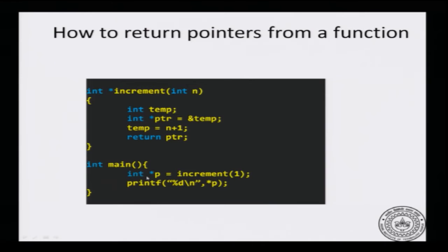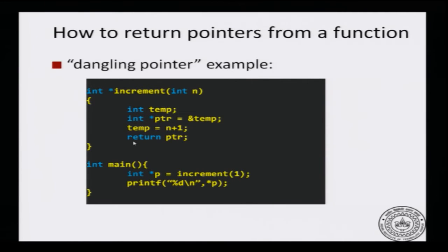I have a main function in which I have an integer pointer p, and I will make it point to the return value of increment(1). The increment function takes an argument, increments the value, makes a pointer to the incremented value, and returns that pointer. This leads to a very notorious error in C known as a dangling pointer.